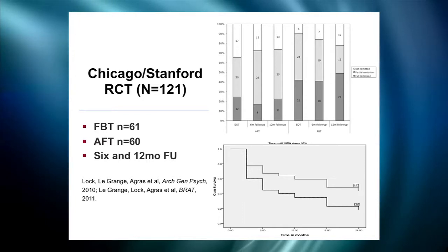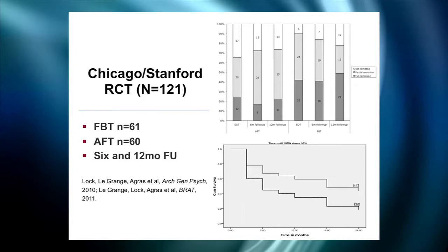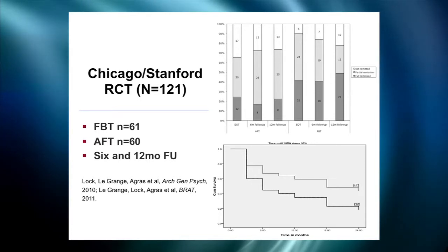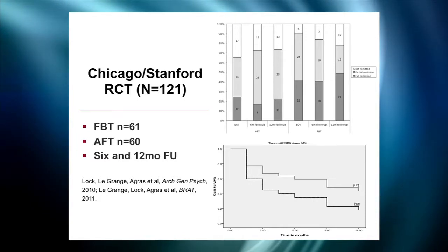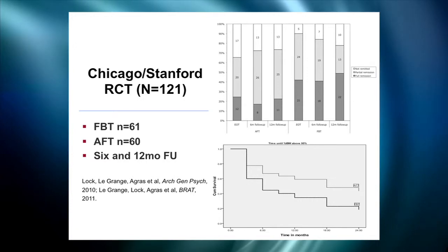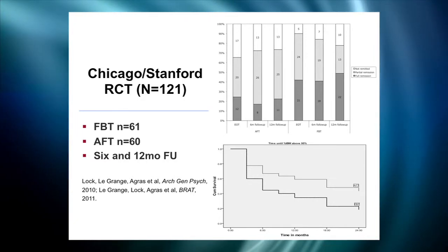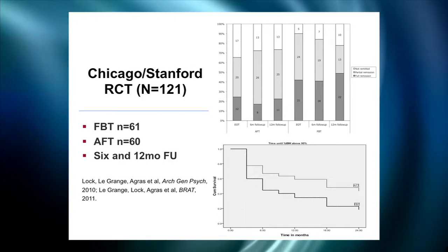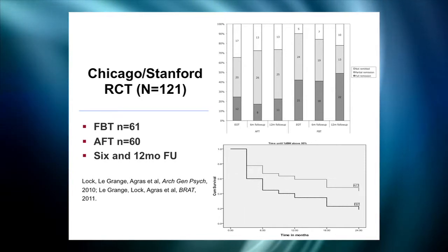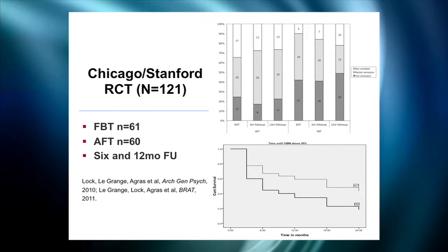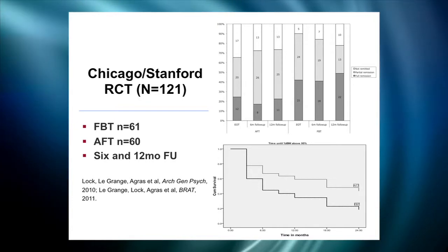Another way of looking at these findings is the survival curve, which shows how much time it takes to reach the 95% mark of weight restoration. The family-based treatment line was much quicker at adding patients to the weight-restored group at just about every step of the way — at three months, six months, end of treatment, and at six and twelve month follow-up. The adolescent-focused therapy was a lot slower at adding patients who met that bar. Family therapy also showed quicker out-of-the-blocks weight gain and better maintenance post-treatment. Altogether, very encouraging findings.